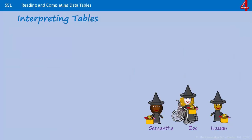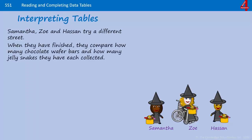It's getting a little more tricky here because there will be two columns of data. Samantha, Zoe and Hassan try a different street. When they have finished they compare how many chocolate wafer bars and how many jelly snakes they have each collected.